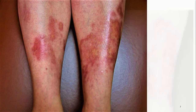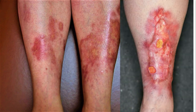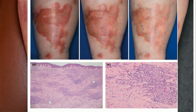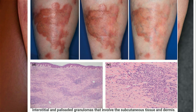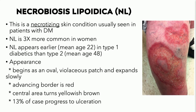This is necrobiosis lipoidica diabeticorum — a cutaneous manifestation of diabetes that may ulcerate. It takes on a typical yellowish to yellowish-orange appearance, sometimes with a centrally clear area and a peripherally red border, infiltrated at the beginning, eventually ulcerating. Histopathologically, we see interstitial and palisaded granulomas; at low power it almost looks like a layer cake, which is one of the hallmarks of NLD histopathologically.